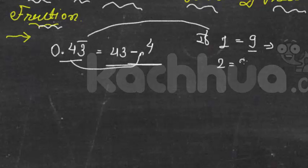Three numbers has bar, then 999 in denominator. Here 4 has not a bar, so if one number have not bar, then put 0 in denominator.